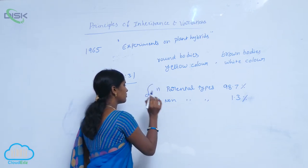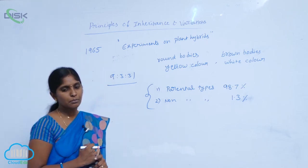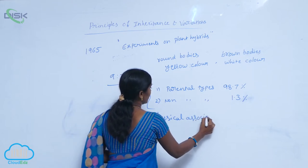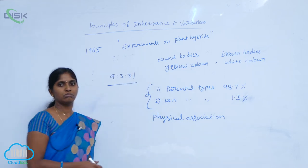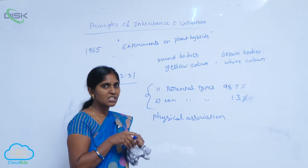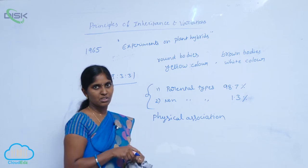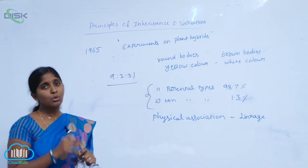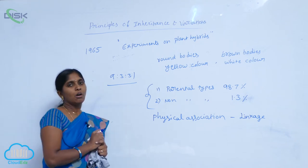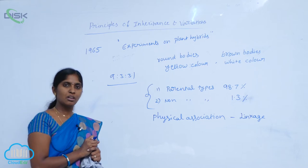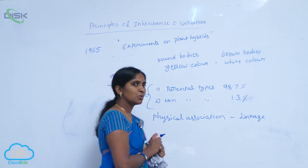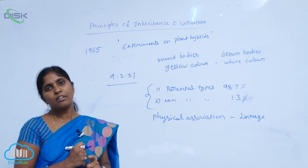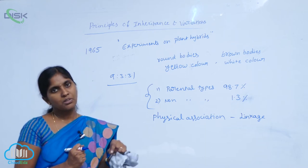After his observation, Morgan gave one concept: there is a physical association among the genes present on the same chromosome. This physical association is also called linkage. The linkage occurs among linked genes — linked genes are all the genes present on the same chromosome. The linkage phenomenon is the tendency to retain parental characters even in offspring.